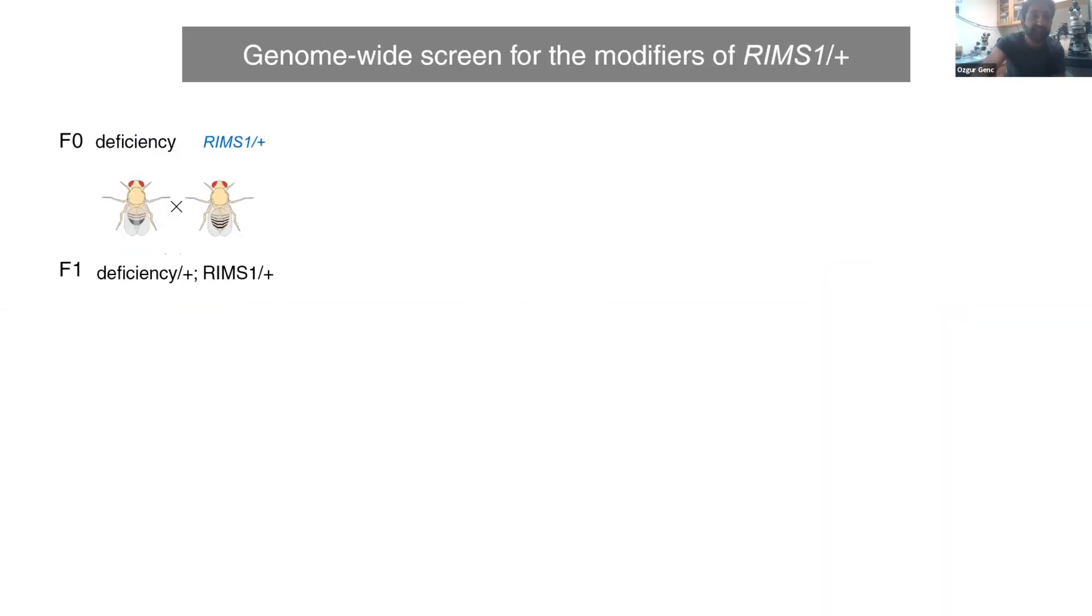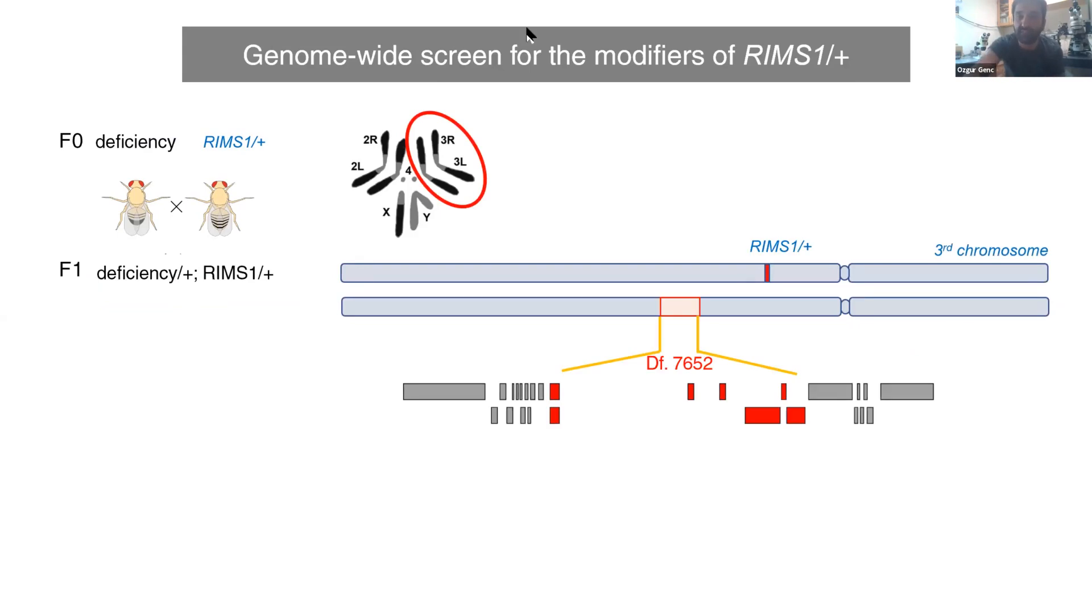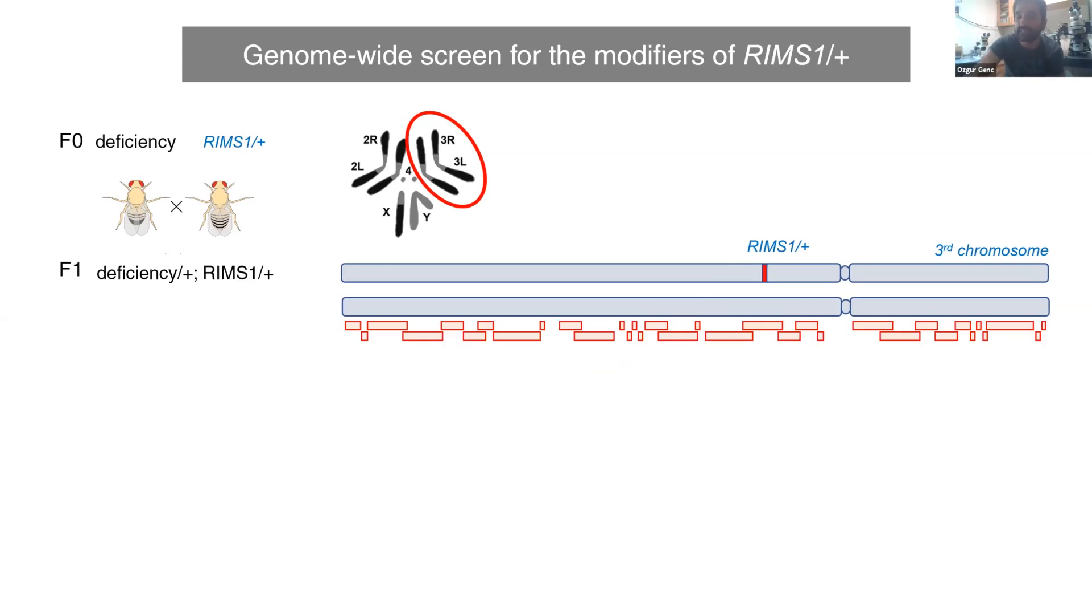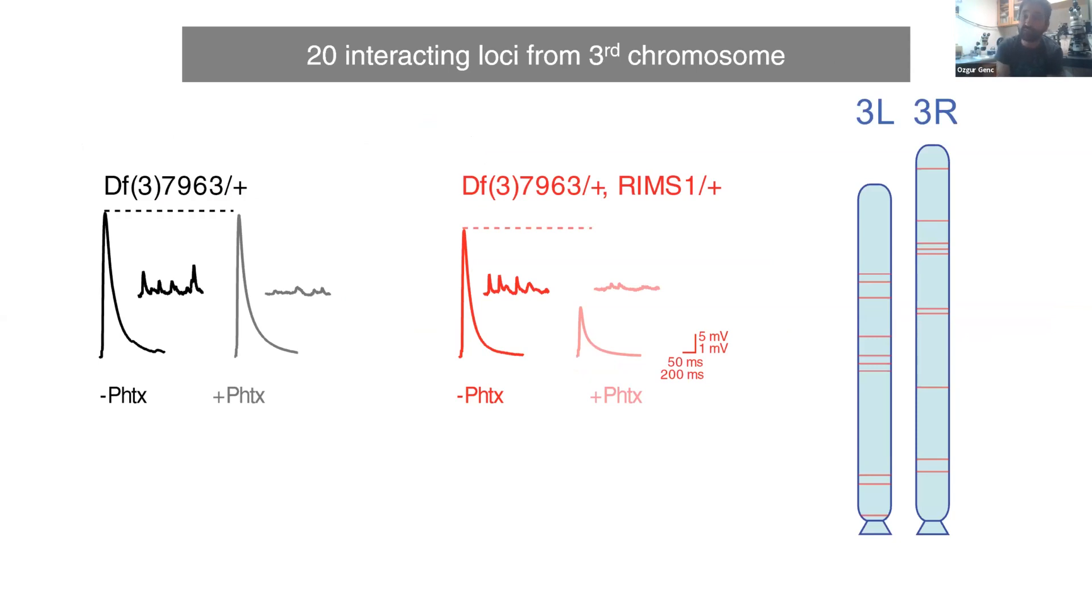We use Drosophila as a system because it's a tractable system for genetic analysis. What we did is we introduced a heterozygous mutation—here it's exemplified by RIMS—and placed a large deletion of the genome, which is called a deficiency. When we put this together, you can see one arm of the chromosome carries one mutation and the other pair of the chromosome has a deletion. If there is a genetic interaction, we should be able to find any of the genes in this deletion that should be responsible. By using this assay, we could basically scan the whole Drosophila genome. In this case I'm showing one-third of the genome, which is the third chromosome, and that basically covers almost 6,000 genes. We found nearly 20 loci in the third chromosome that basically showed this genetic interaction.